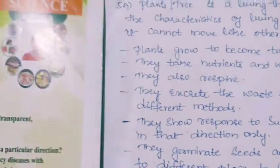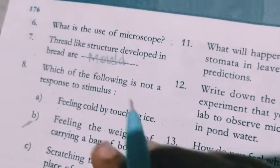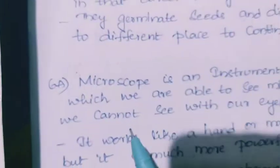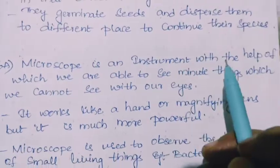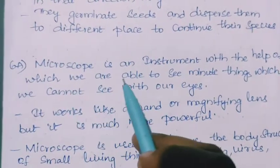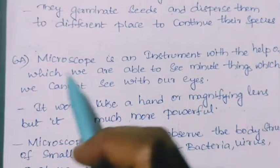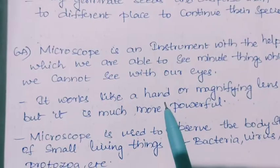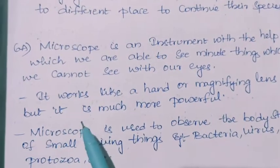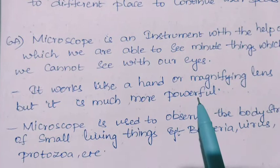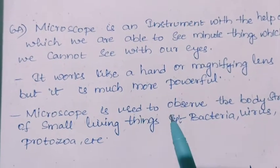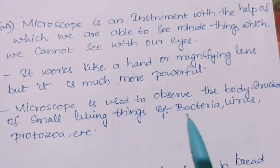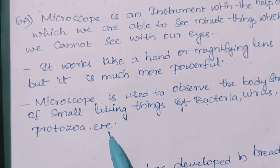Sixth question: what is the use of a microscope? A microscope is an instrument with which we are able to see minute things that we cannot see with our eyes. It works like a magnifying lens, but it is much more powerful. A microscope is used to observe the body structures of small living things, for example bacteria, virus, protozoa, etc.